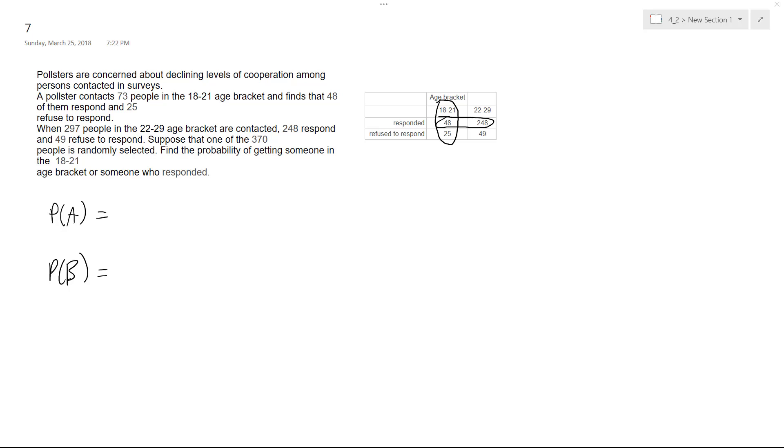All right, so we got pollsters and we want to figure out the probability we get someone in the age 18 to 21 bracket or someone who responded. To do that, we're going to do P(A) plus P(B) minus P(A and B).